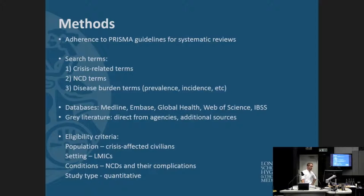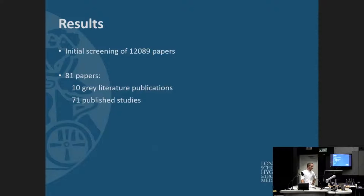We were looking specifically at crisis-affected populations, specifically civilians — we didn't look at veterans, as quite a significant number of papers looked at combat veterans back in their home countries. We were looking specifically at low- and middle-income countries, and NCDs and their complications. We only looked at quantitative studies, with no language restrictions and no time restrictions. We picked up initially just over 12,000 papers and settled on 71 published studies and a further 10 studies from the gray literature.